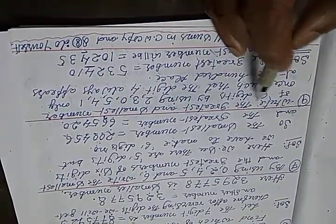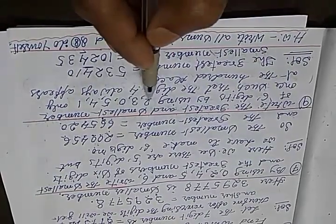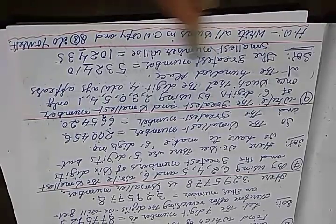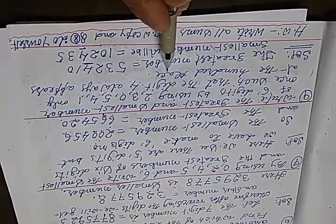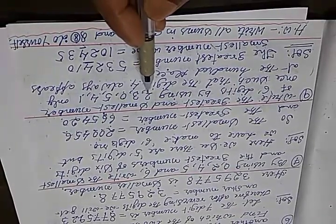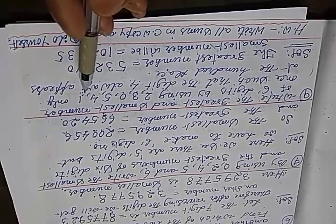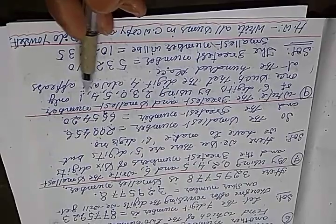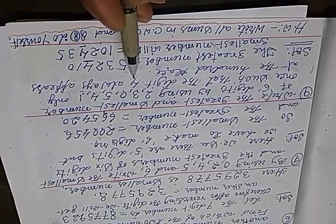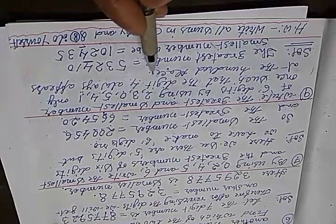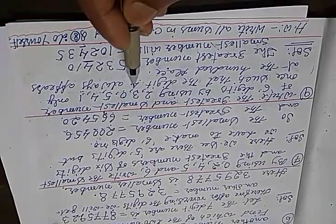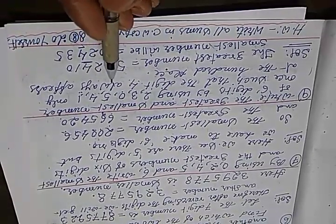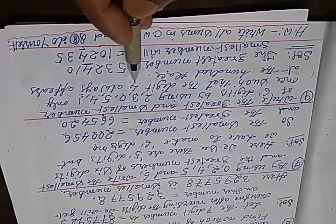Now come to question 9: write the greatest and the smallest number of 6 digits by using 2, 3, 0, 5, 4, 1, such that the digit 4 always appears at the 100th place. There are 6 digits. We have to make the greatest and the smallest 6 digit number using all these digits one time. There is a special instruction: you have to keep digit 4 at always the 100th place during the formation of both the smallest and greatest number.